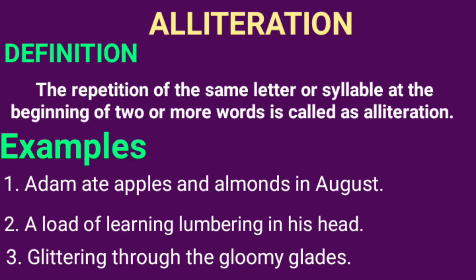In the first example, the letter or syllable 'a' is repeated. In the second example, the letter or syllable 'l' is repeated. And in the third example, the letter 'g' is repeated. When there is the repetition of the same letter or syllable at the beginning of two or more words, it is called Alliteration.